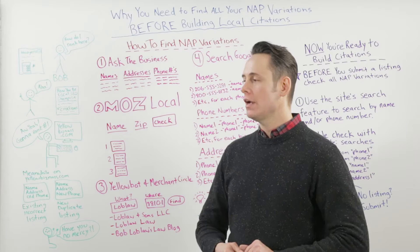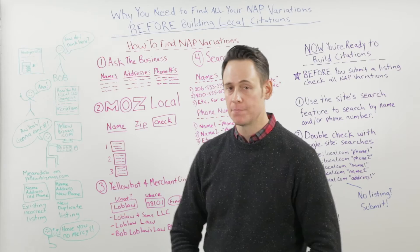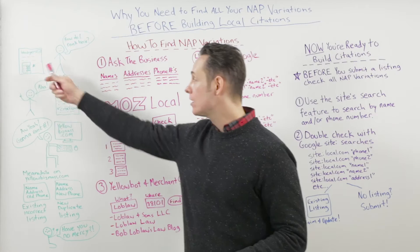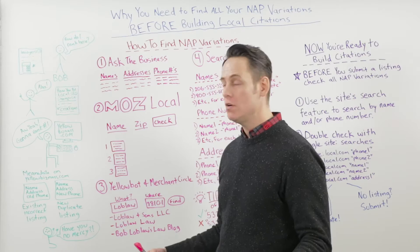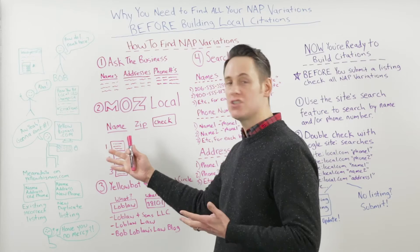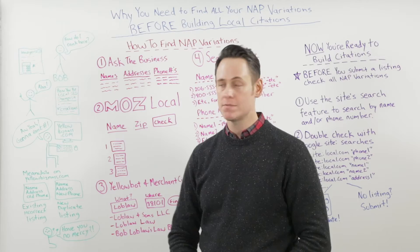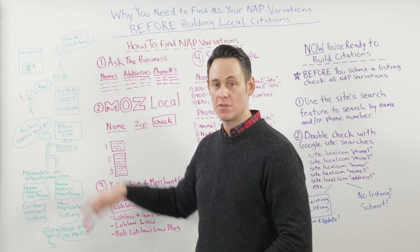I want to illustrate a mistake we see happening all the time in citation building. Bob is a lawyer and he wants to figure out how he can rank in a local pack. He does a little research, comes across an article on how to rank in local SEO, reads about citations and how they can help with his local rankings. The article suggests he uses the local citation finder to research his competitors and find citation opportunities, so he's got a list and he's off to submit his business to various directories.